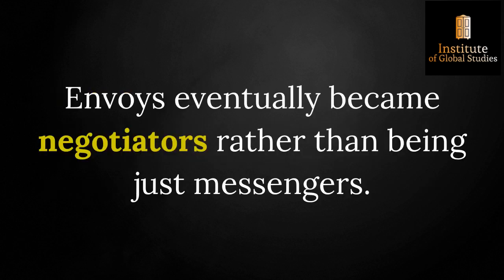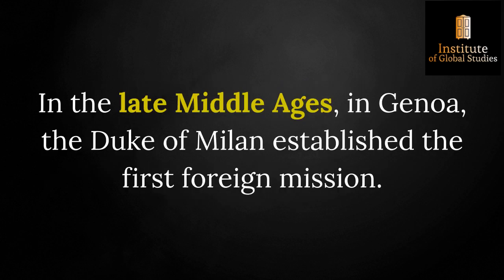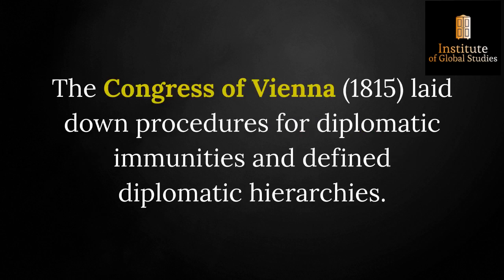Envoys eventually became negotiators rather than just messengers. During the Middle Ages (6th to 18th century), the scope of diplomacy did not grow much, and diplomats were mostly confined to maintaining archives rather than negotiating. In the late Middle Ages, the Duke of Milan established the first foreign mission in Genoa. After the American and French Revolutions, diplomacy became more democratic and less aristocratic. The Congress of Vienna in 1815 laid down procedures for diplomatic immunities and defined diplomatic hierarchies.